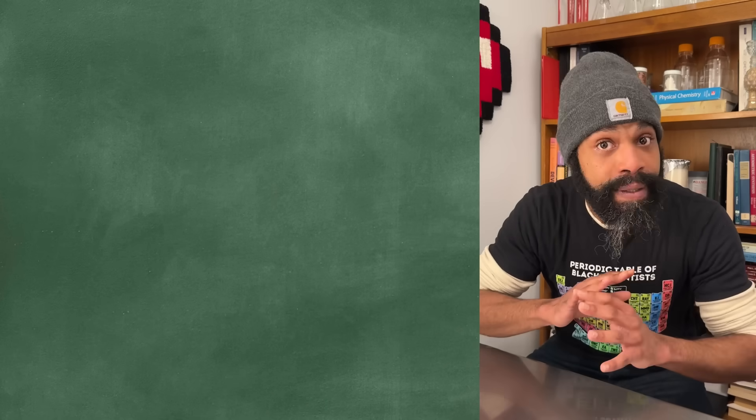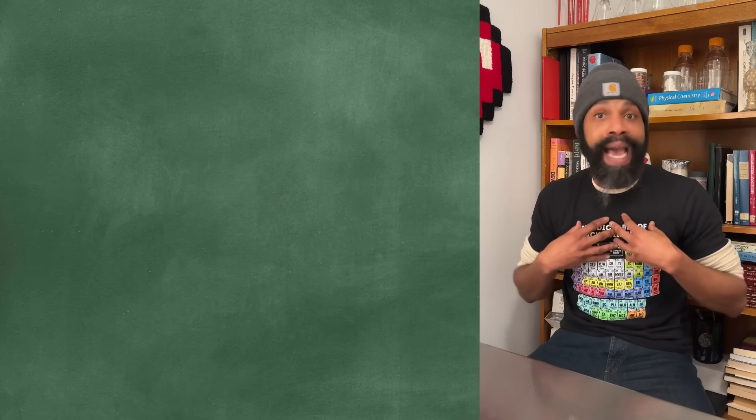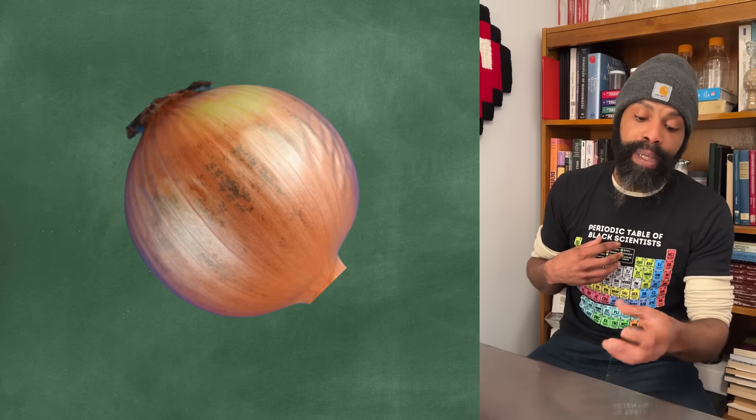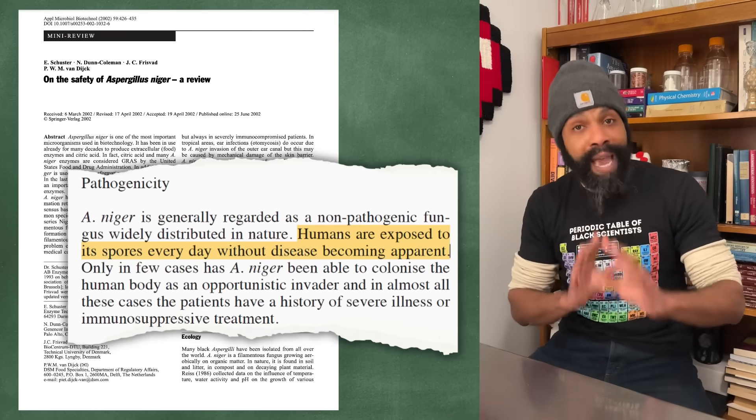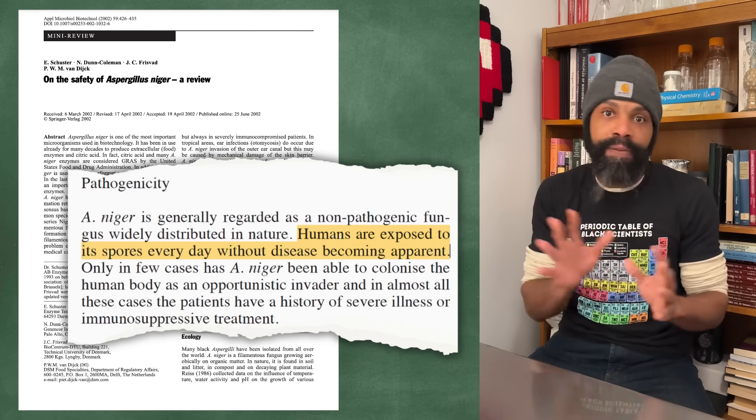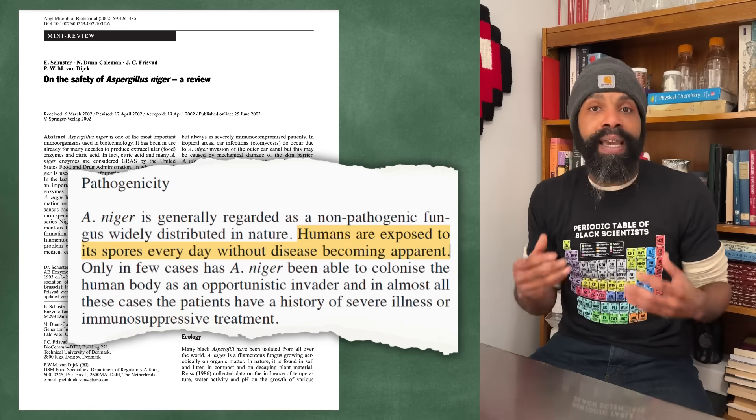I don't care how clean you think your house is, there is Aspergillus niger in your house, and it's okay. It's more or less fine. I am not the only one who's ever gotten an onion out of the cabinet and been like, yo, there's a little bit of black stuff on it, I'm going to rinse this off.